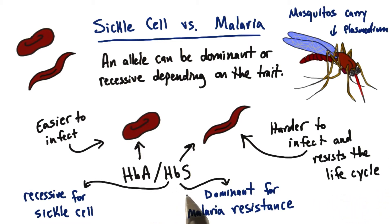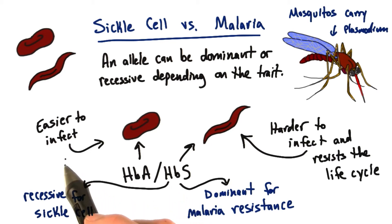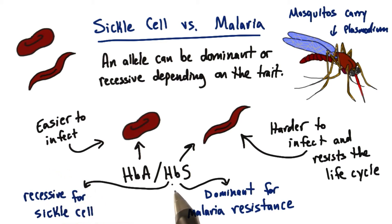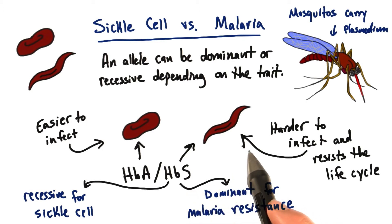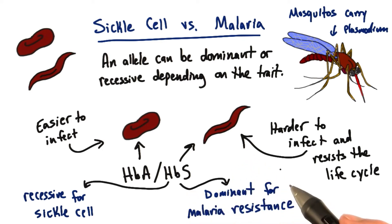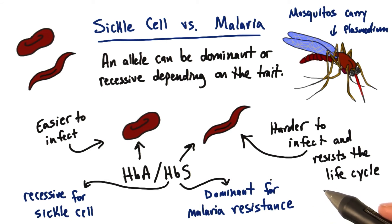In this scenario, if we have no copies of the HBS allele, we're going to be more susceptible to plasmodium infection and malaria. One copy makes you more resistant to malaria, but may give you mild symptoms of anemia from some limited sickling of cells. But two copies of the HBS allele would result in full sickle cell anemia, which typically can reduce a person's lifespan and even cause death during childhood.